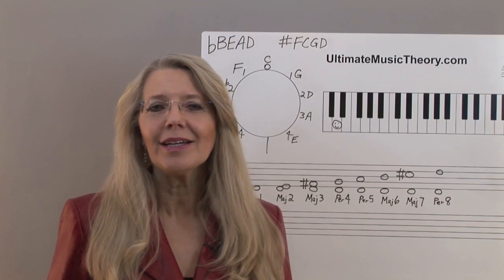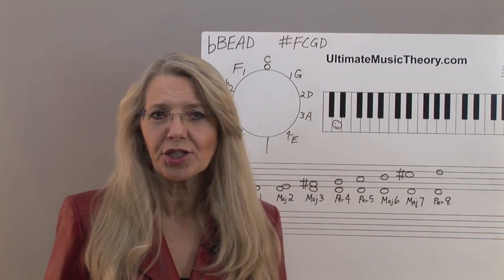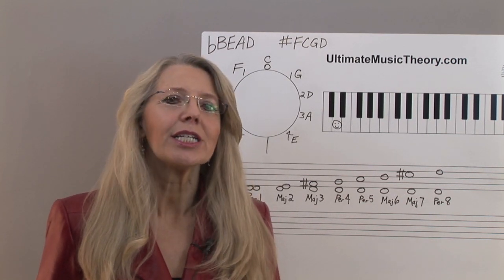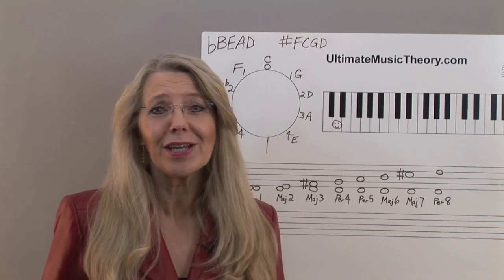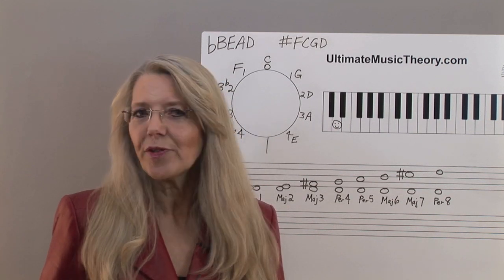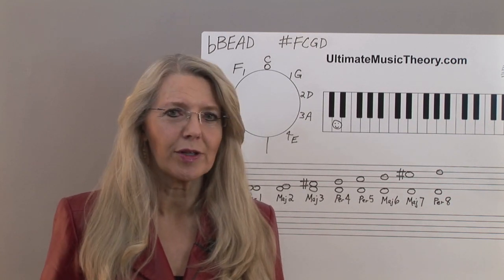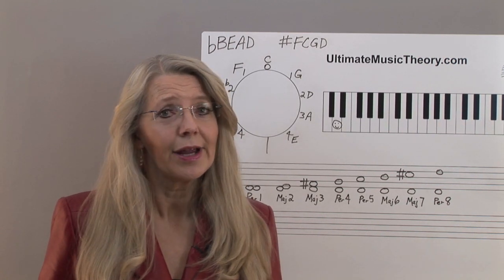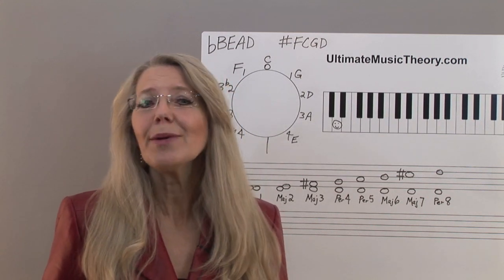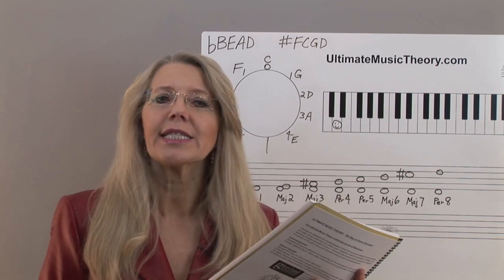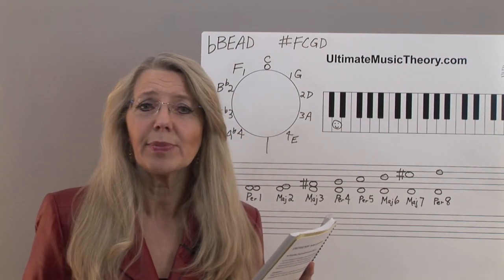In our fifth Ultimate Music Theory Basic Rudiments Lesson, you learned how to use the circle of fifths to identify the major key signature of the lower note of an interval, and how to change a major interval of a second, third, sixth, and seventh into a minor interval by lowering the top note one half step. We also learned that perfect intervals are a first, fourth, fifth, and eighth. Remember the UMT tip for intervals: H for harmonic — together, written one note above the other; and M for melodic — separate, written one note beside the other. When completing the review test, remind students to read all the questions carefully, underlining the important words, and always check their review test to be sure all the questions have been completed correctly.